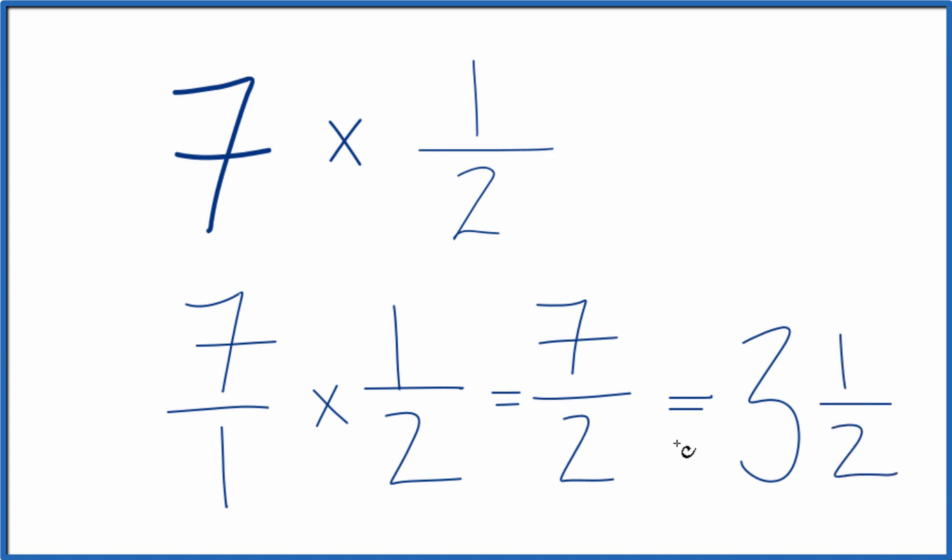And 7 over 2 equals 3 and 1 half. So, that's it. 7 times 1 half equals the fraction 7 halves, or if you want a mixed number, 3 and 1 half. This is Dr. B. Thanks for watching.